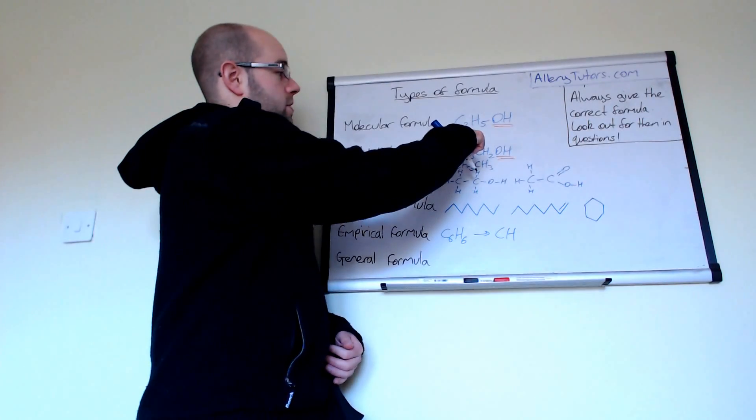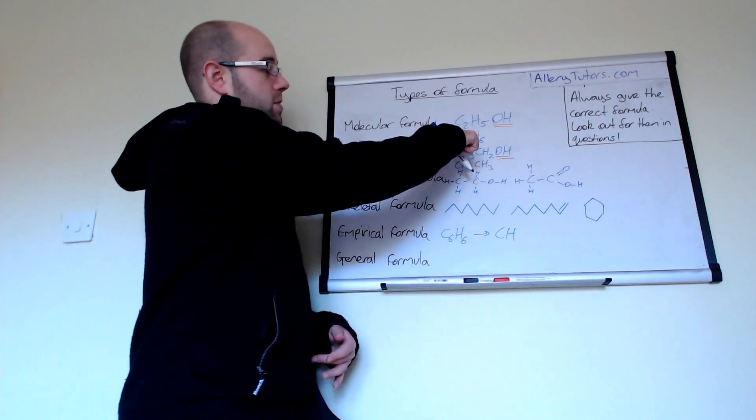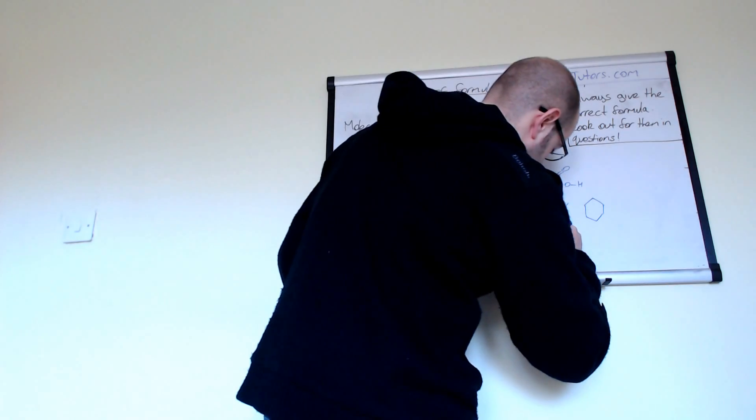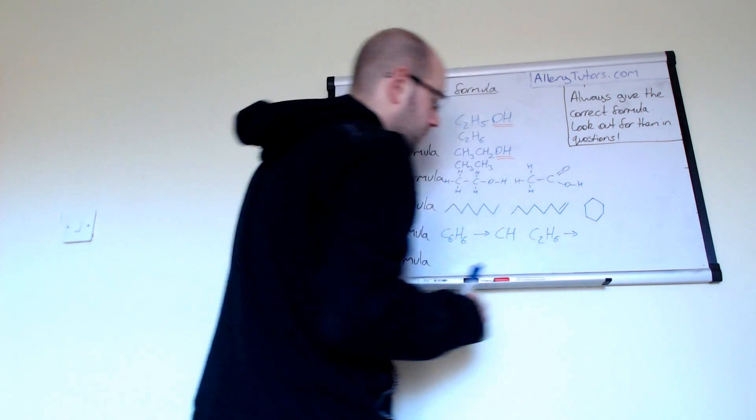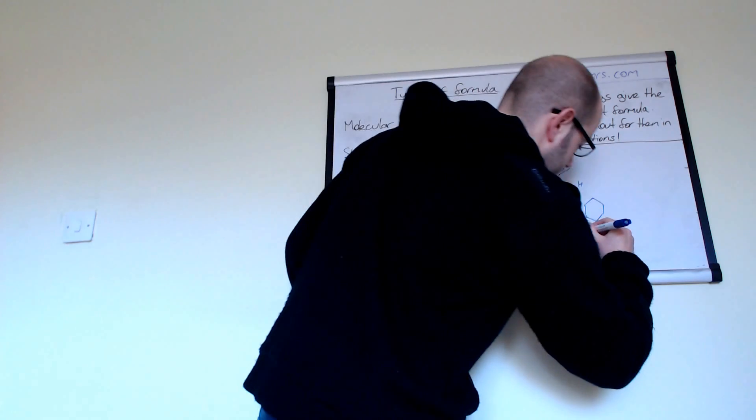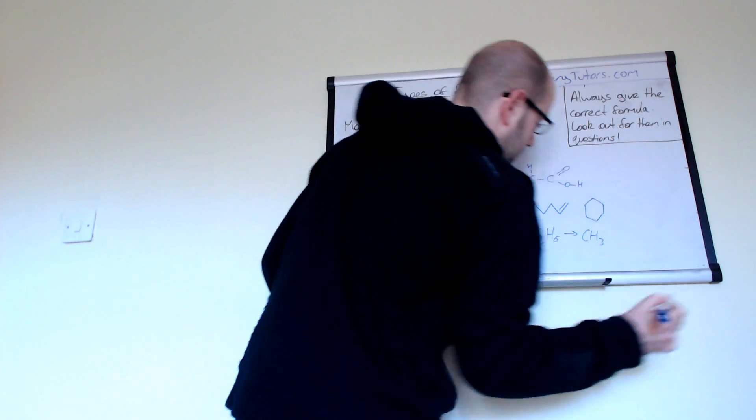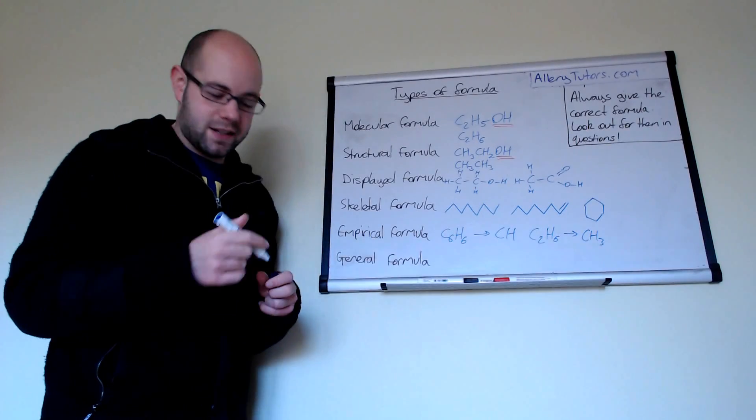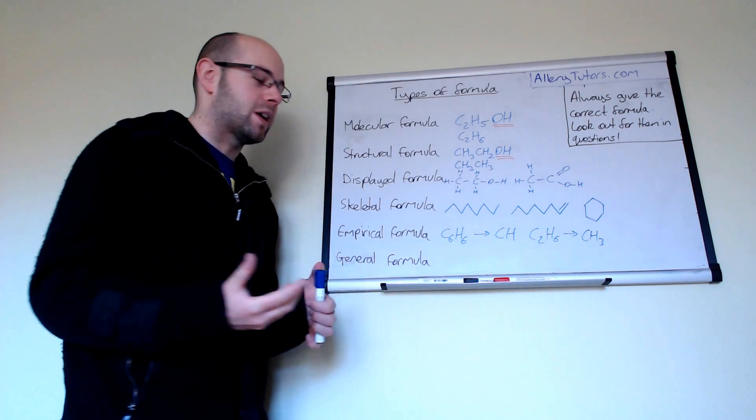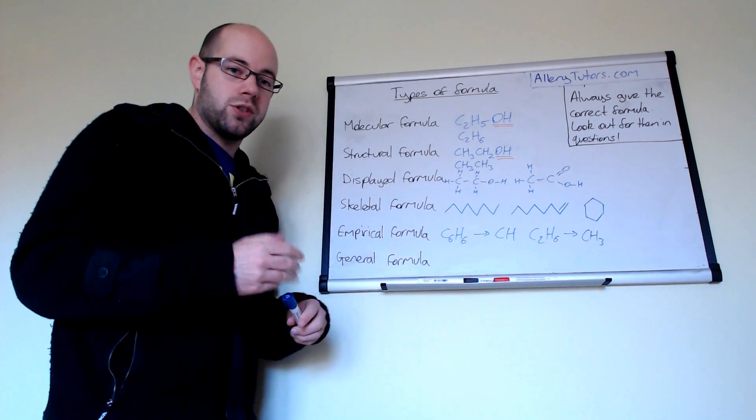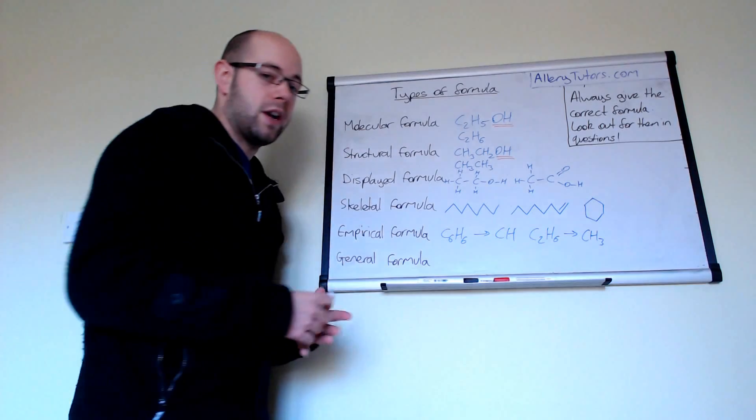If we had to do this one which is ethane so we have C2H6, the simplest whole number ratio of that would be CH3. Now you might look at that and you might think well that doesn't look right and it doesn't chemically look right. All it's shown is the simplest whole number ratio of carbons to hydrogens.